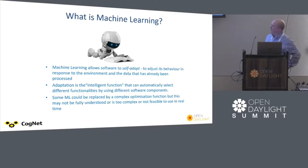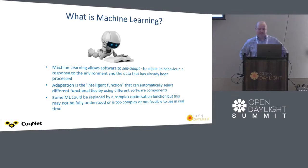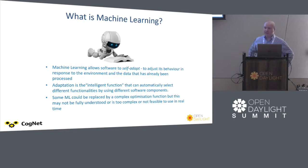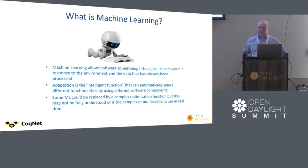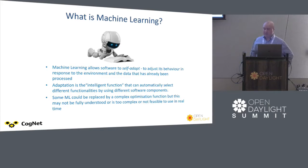So what is machine learning? Machine learning is a technology based around the processing of big data. The idea is that it allows software to self-adapt — software can dynamically adjust its behavior in response to the environment. This adaptation is done via an intelligent function that can automatically select the appropriate type of functionality according to the environment. Machine learning is also a bit like a heuristic in so far as that in some cases you're dealing with a very complex optimization function, but often the parameters of data aren't quite well understood and it's just too complex to fully compute in real time.